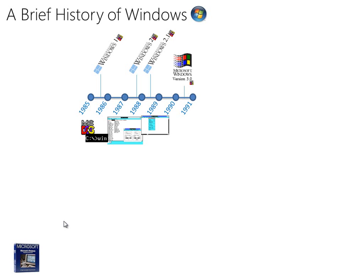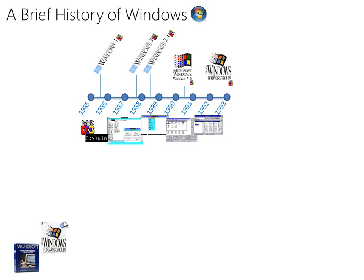Windows 2.1 came in 1988. Then Windows 3 was the big changer in 1990 — it introduced the Program Manager shell, File Manager, a really revamped control panel, and important things like Solitaire, Hearts, and Minesweeper. This shell, introduced in 1990, would be the key interface for the next five years. Windows for Workgroups adopted it as well, allowing connectivity, domains, and sharing resources between machines.